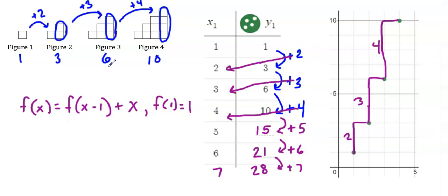Remember, a recursive rule takes you from one figure to the next. To get to the next figure, I have to take the previous figure and add x. x represents the figure number, so this is the figure number, and then f(x) represents the number of blocks that are in that figure.